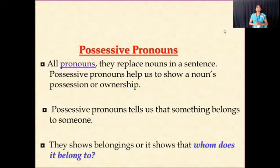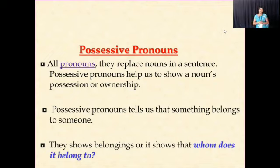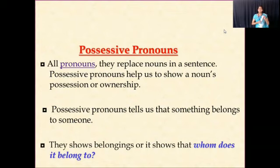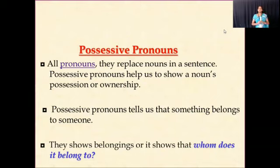Here, possessive pronouns also replace the noun in a sentence. But possessive pronouns help us to show the noun's possession or ownership. We can say that possessive pronouns tell you that something belongs to someone. For example, I have here one duster. Whom does it belong to? This duster belongs to me. It means that the possession of this duster is being shown here. So we can use the possessive pronoun 'mine' here.